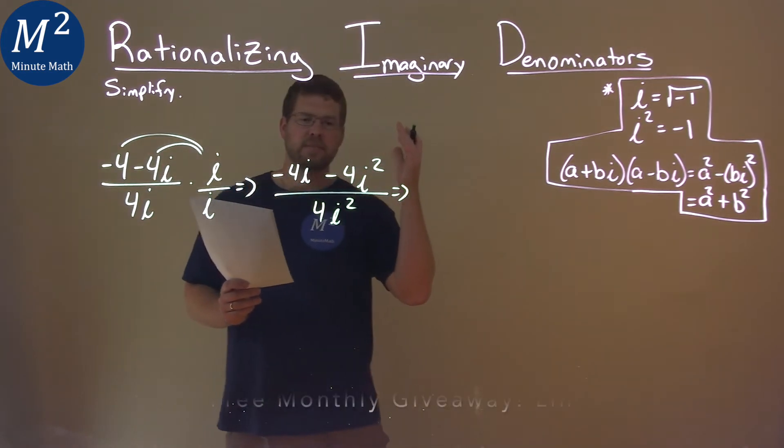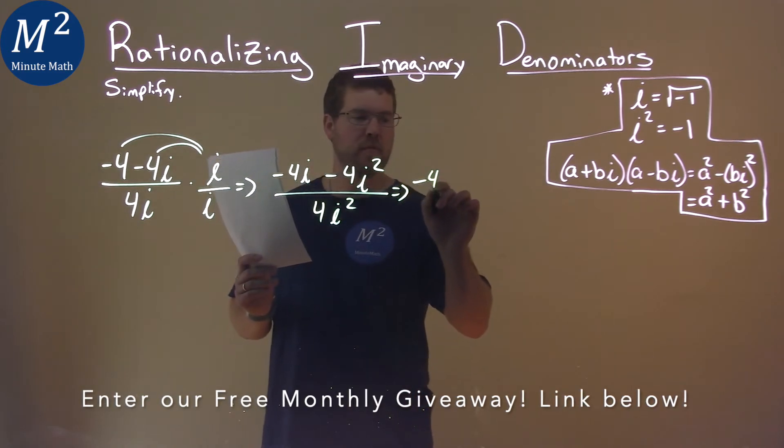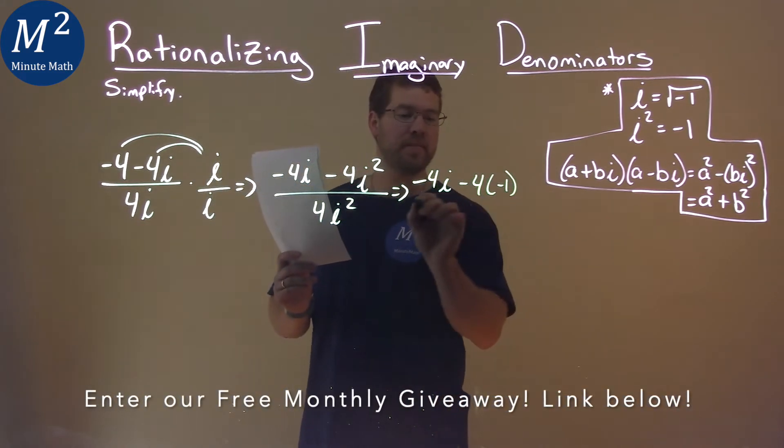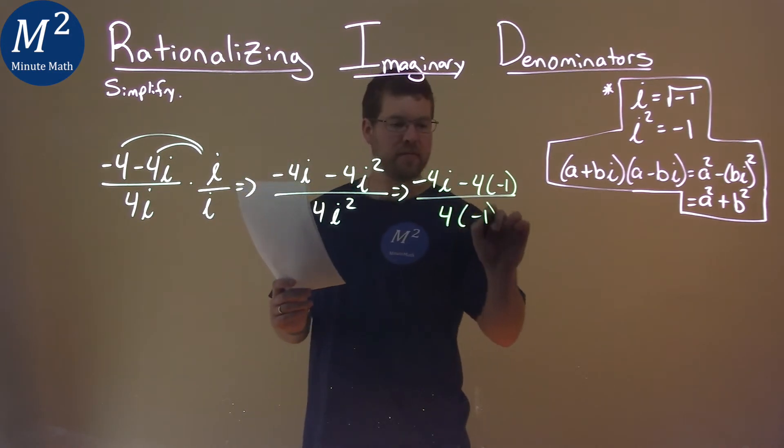Well, what do we know about i squared? i squared equals negative 1. So let's replace that. Negative 4i minus 4 times negative 1 over 4 times negative 1.